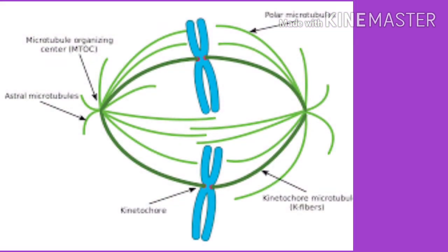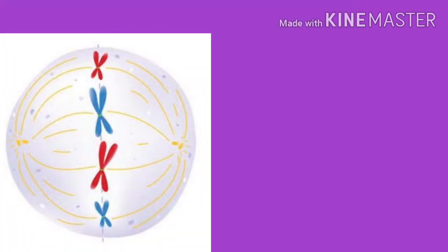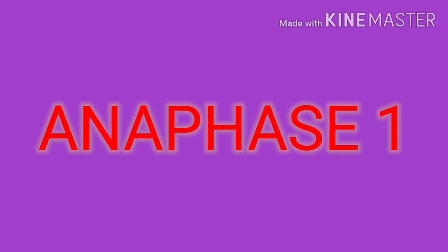Coming to metaphase 1: bivalents arrange at the equator of the cell to form the metaphase plate. Orientation is random, with either parental homolog on either side. This means there is a 50-50 chance for the daughter cells to get either the mother or the father homolog for each chromosome.